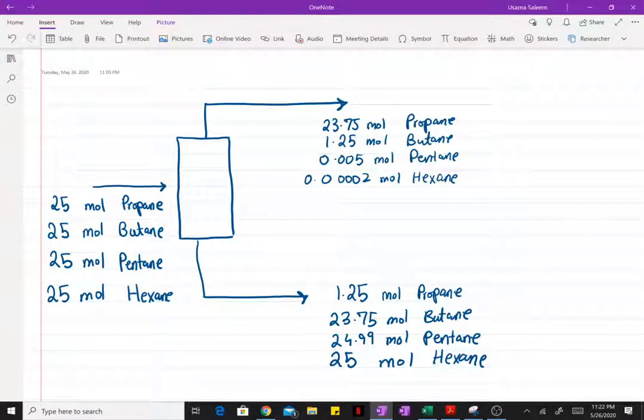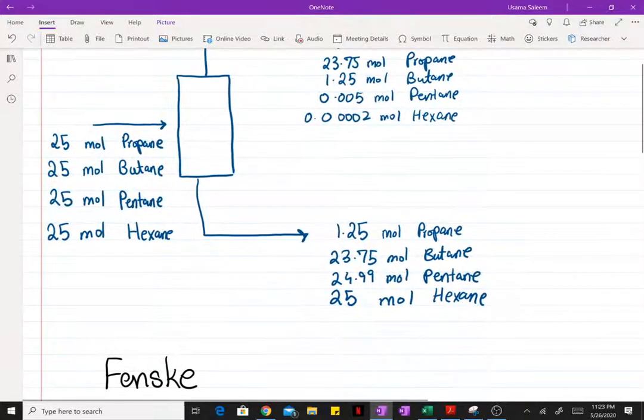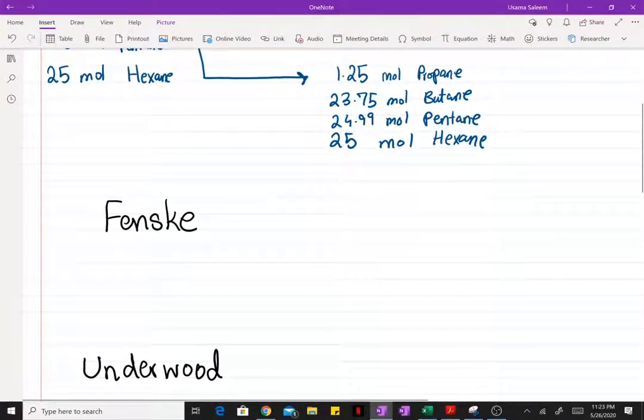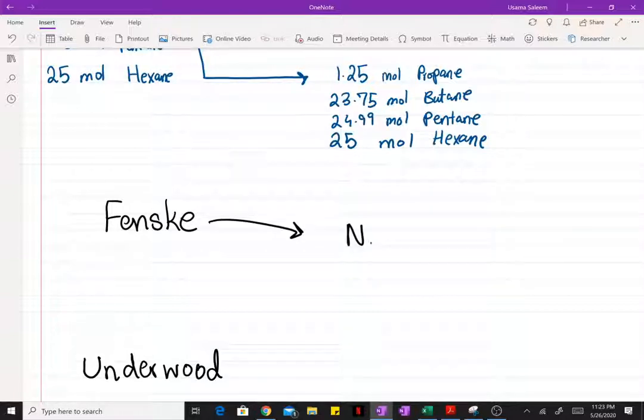Okay, so once again we have this hydrocarbon problem that we've been dealing with in the past couple of videos. Up till now we've used the Fenske equation to find the minimum number of stages, which was equal to 4.83.